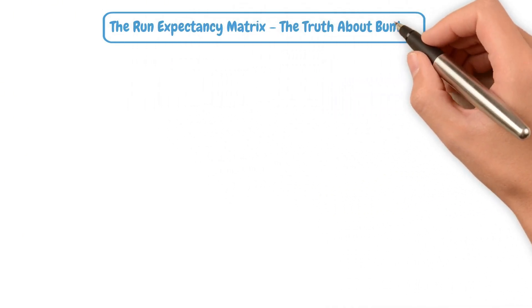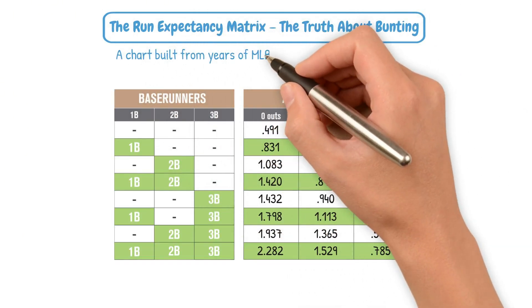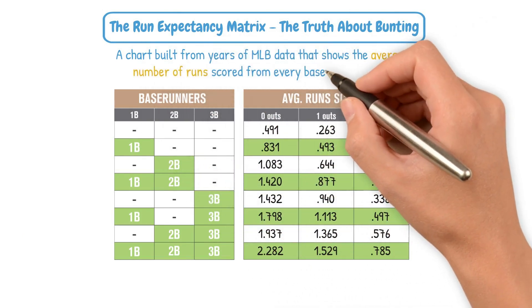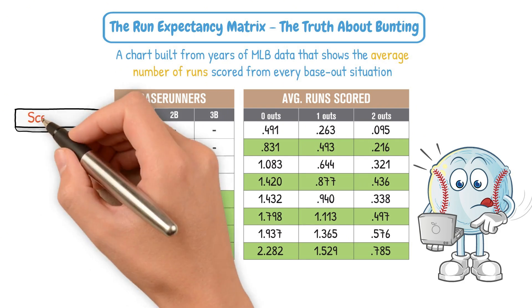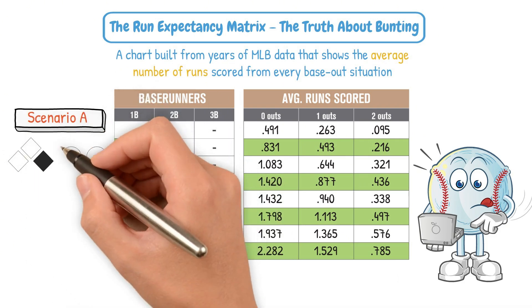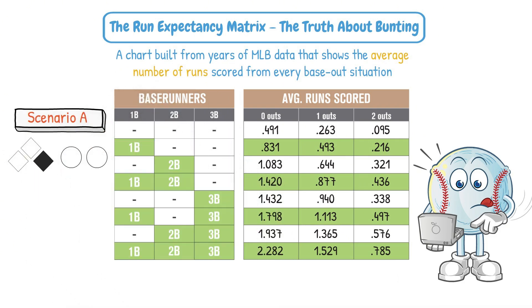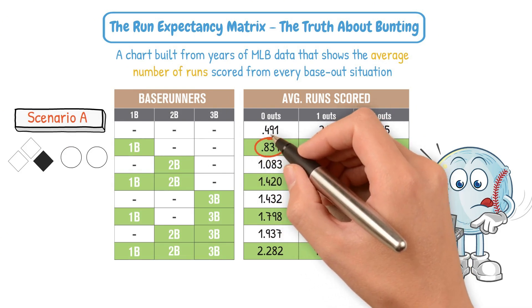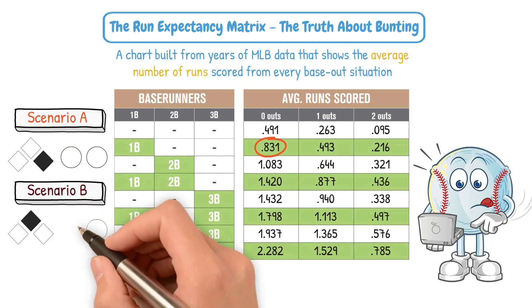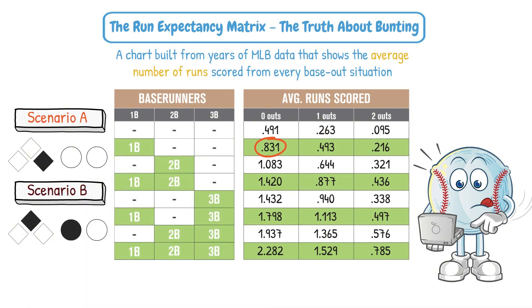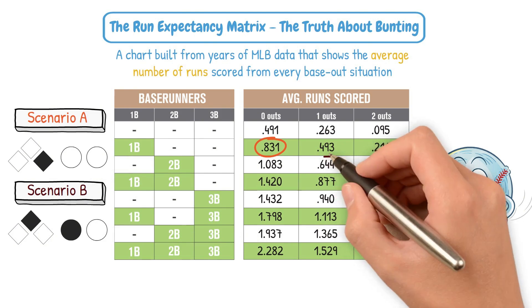Enter the run expectancy matrix — a chart built from years of MLB data that shows the average number of runs scored from every base-out situation. Let's look at two scenarios. Scenario A: a runner on first with no outs. The run expectancy matrix tells us expected runs are 0.831. In Scenario B, a runner on second with one out after a successful sack bunt — expected runs are now 0.644.